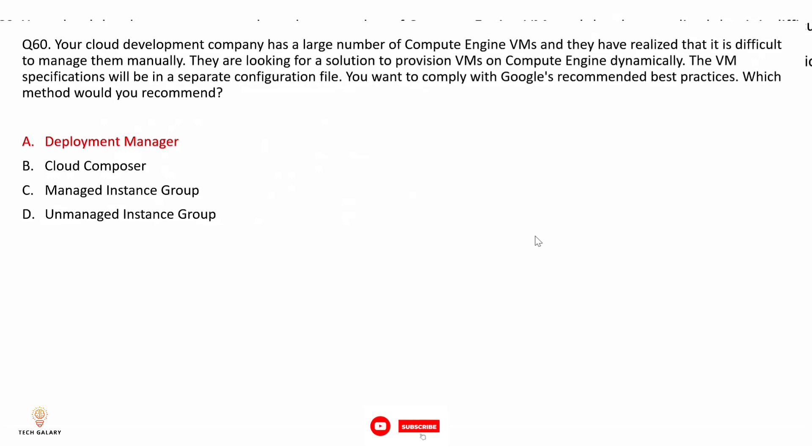Option A: Deployment Manager — this is the infrastructure-as-code tool for GCP. Since they are looking to provision VMs dynamically, Deployment Manager is the correct tool. Option B: Cloud Composer — Cloud Composer is a workflow automation tool and is not the right tool for infrastructure provisioning. Option C: managed instance group — you cannot dynamically provision VMs with different configurations using a managed instance group. Option D: unmanaged instance group — also cannot dynamically provision VMs. The correct answer is Deployment Manager.